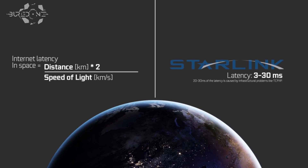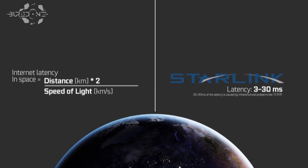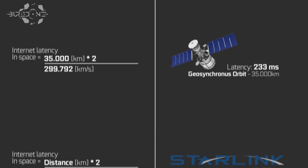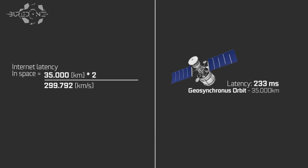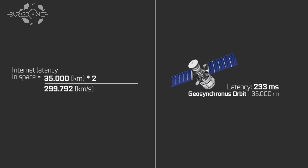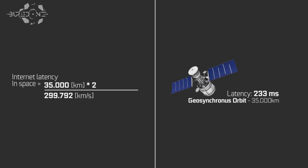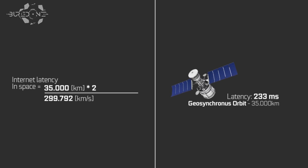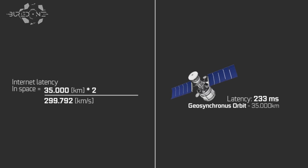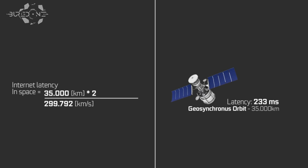For geosynchronous orbits, satellites are about 35,000 kilometers away from Earth — that's where you normally put satellites. The latency there is 233 milliseconds. If you're playing Call of Duty and you have 233 milliseconds latency, that is pretty bad — we all know what happens then. But let's take this one step further.